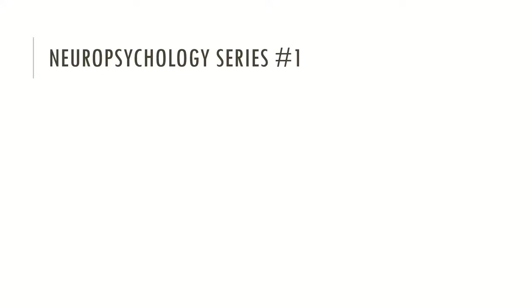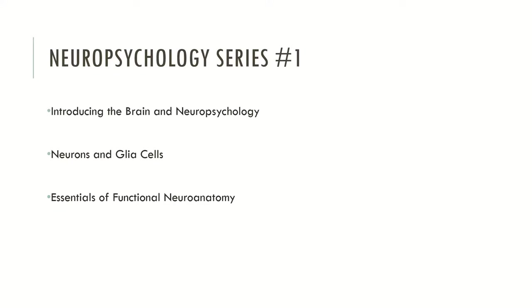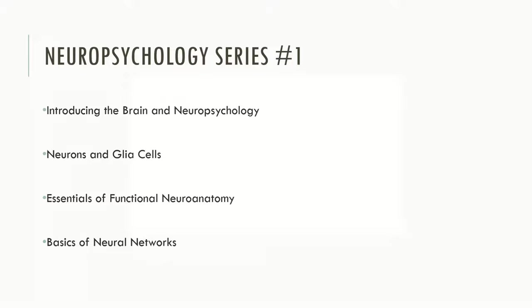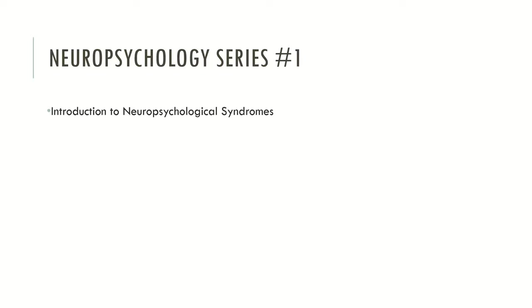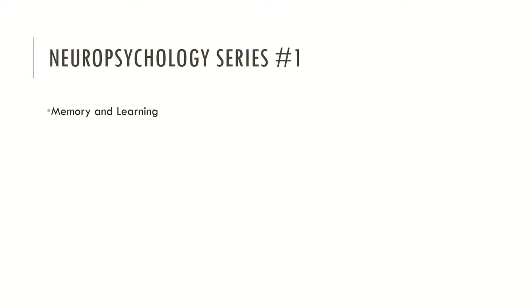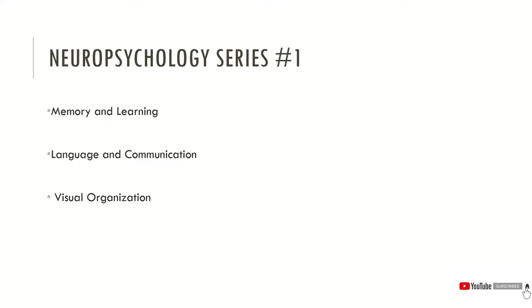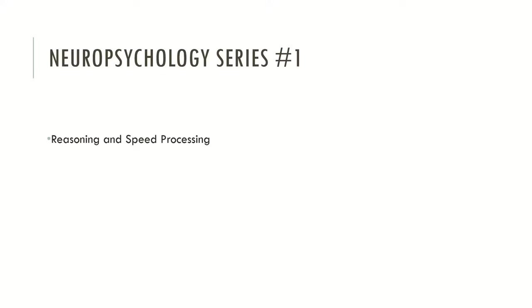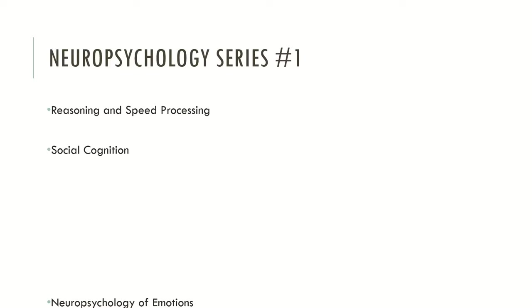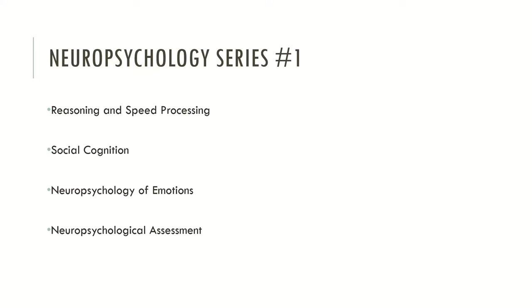Now let's see the topics related to this new neuropsychology series. The first is Introduction to the Brain and Neuropsychology. The second is Neurons and Glial Cells. The third is Essentials of Functional Neuroanatomy. The fourth is Basics of Neuron Networks. Then: Introduction to Neuropsychological Syndromes, Neurocognitive Functions, Executive Functions, Complex Attention, Memory and Learning, Language and Communication, Visual Organization, Psychomotor Functions, Reasoning and Speed Processing, Social Cognition, Neuropsychology of Emotions, Neuropsychological Assessment, and Neuropsychological Rehabilitation.